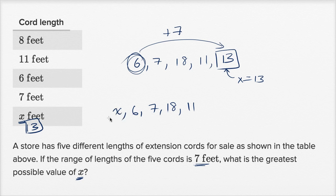well, x is going to be the minimum of our cord lengths, and then you would take seven less than the highest. So 11 minus seven, 11 minus seven is going to get you to four.